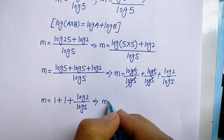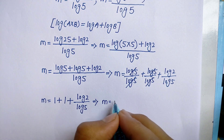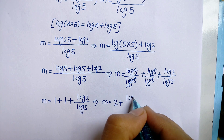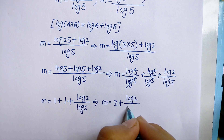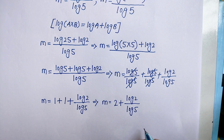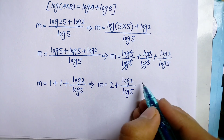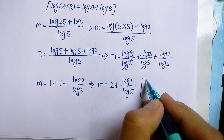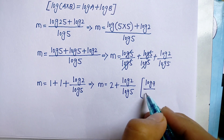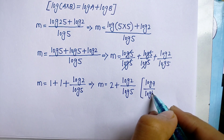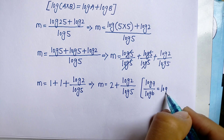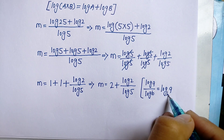So m is equal to 2 plus log 2 upon log 5. Now we know the division rule of log: log a divided by log b is equal to log of a base b.